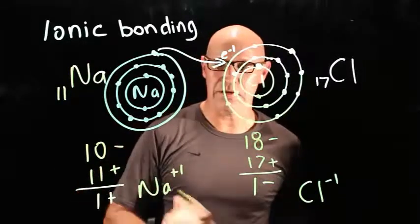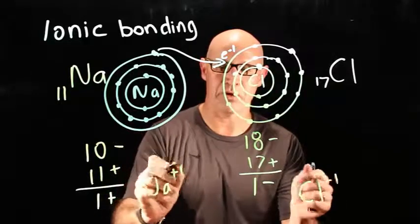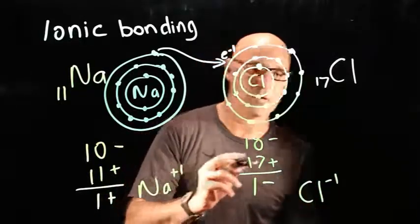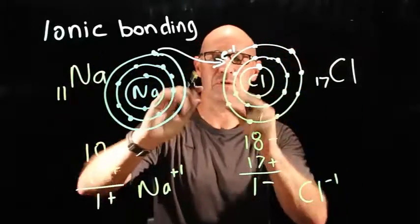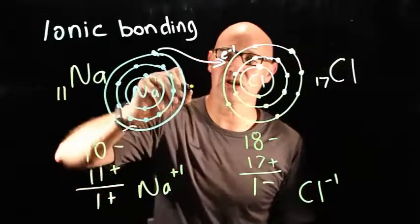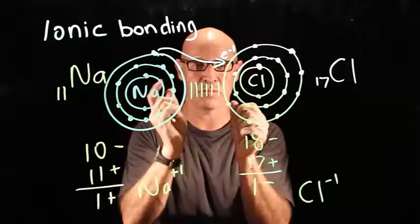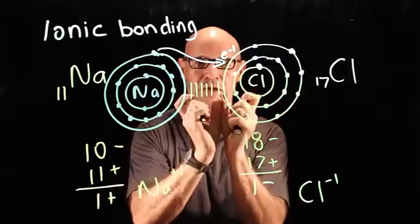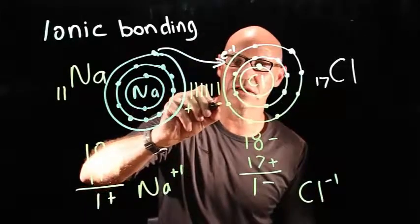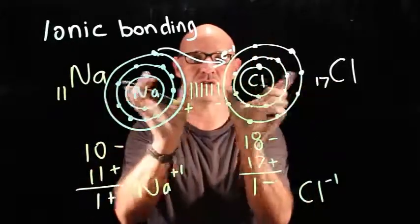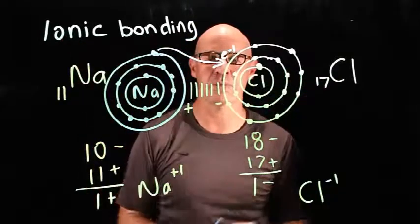So, we have got our two ions that both have opposite charges. And so, what happens here is that they bond together with this electrostatic charge. What that means is, just like a magnet, where you've got two magnets, the positive and the negative are attracted to each other. So, we've got a slightly positive sodium and a slightly negative chlorine, and they have an electrostatic charge. They're bonded together in an ionic compound.